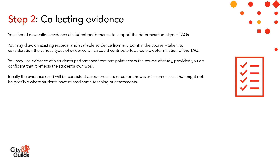Step two is collecting the evidence. You should now collect evidence of the student's performance to support the determination of your TAGs. You may draw on existing records and available evidence from any point in the course, taking into consideration the various types of evidence which could contribute towards the determination of the TAG. You may use evidence from any point across the course of study, provided you are confident that it reflects the student's own work. Ideally, the evidence used will be consistent across the class or cohort, though in some cases that might not be possible where students have missed some teaching or assessments.